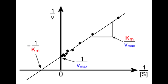On the y-axis here you see inverse of vmax and on the x-axis you see 1 over negative km. You also see the slope of it which is km over vmax.